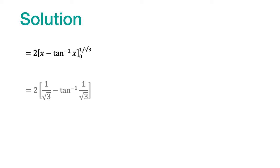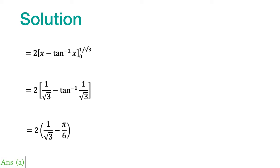We put in the upper limit and get the expression. At the lower limit, which is 0, x minus tan inverse of x becomes 0. Further, tan inverse of 1 by root 3 is equal to pi by 6. So we get the final expression, and the correct answer is option A.